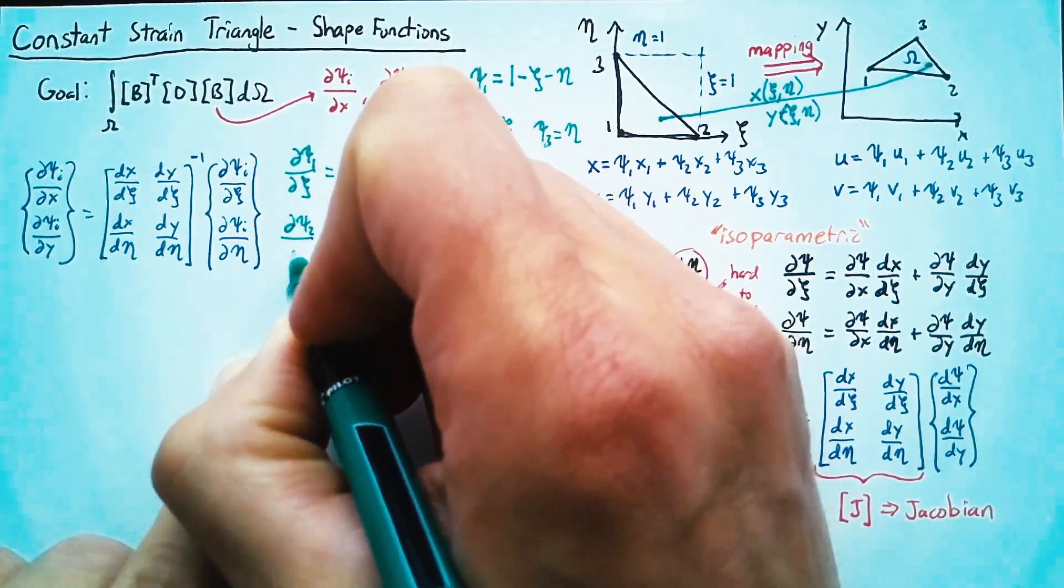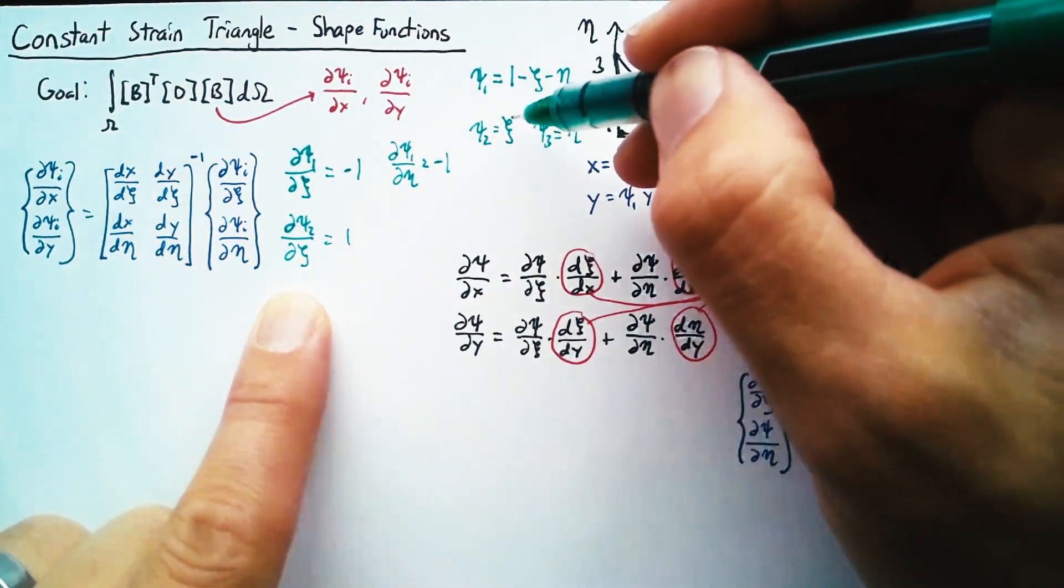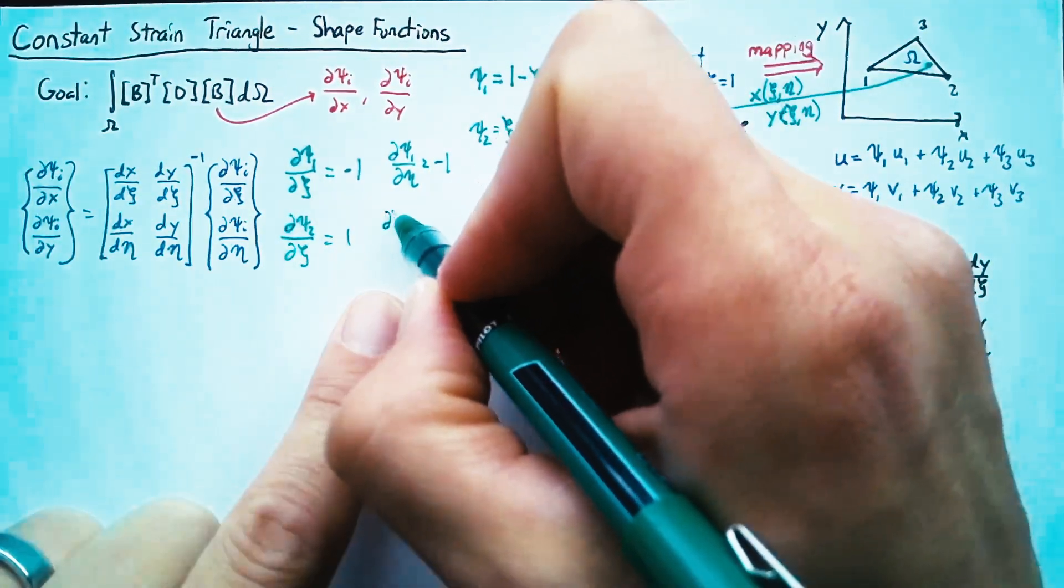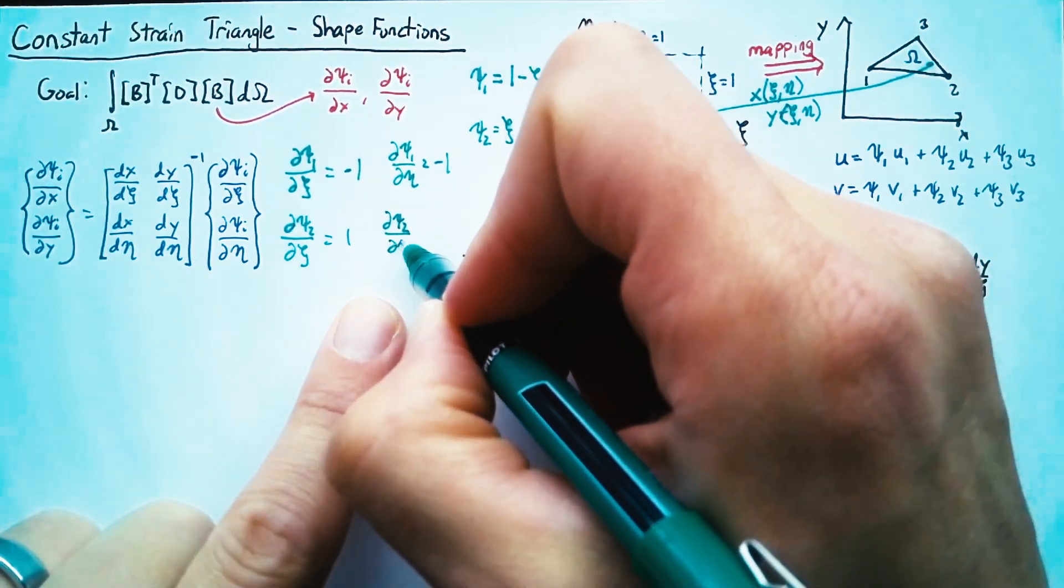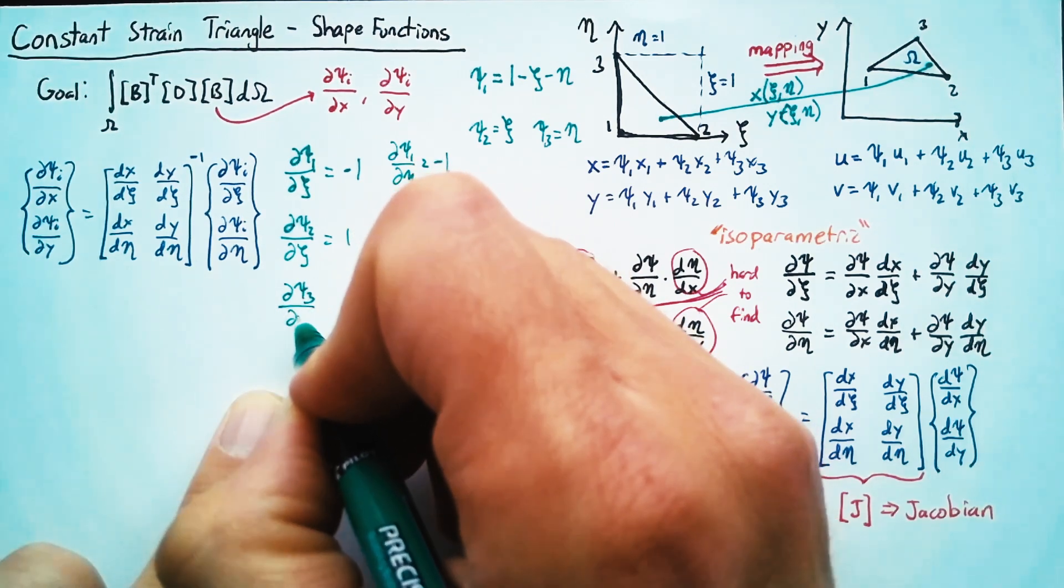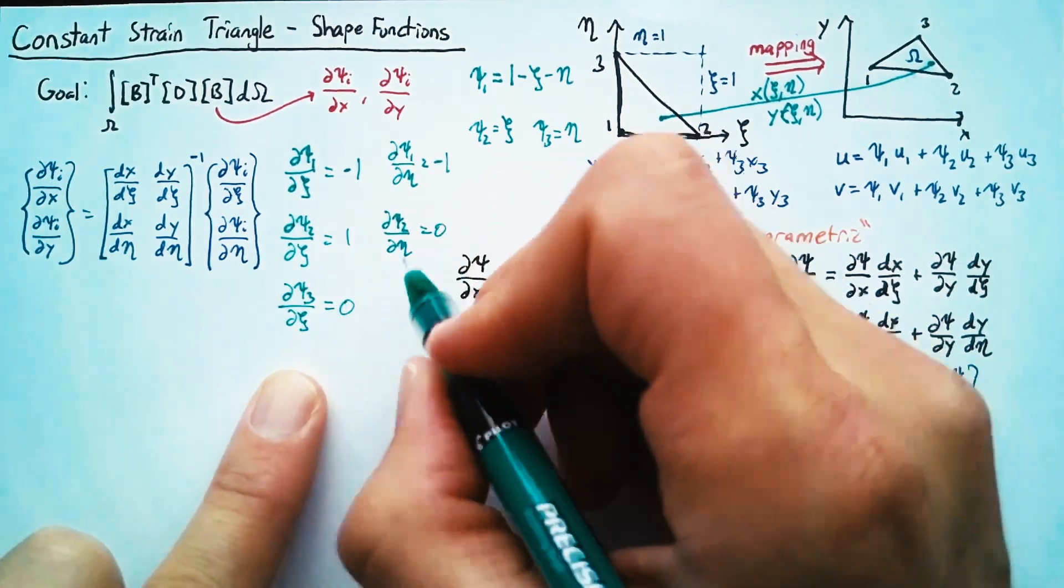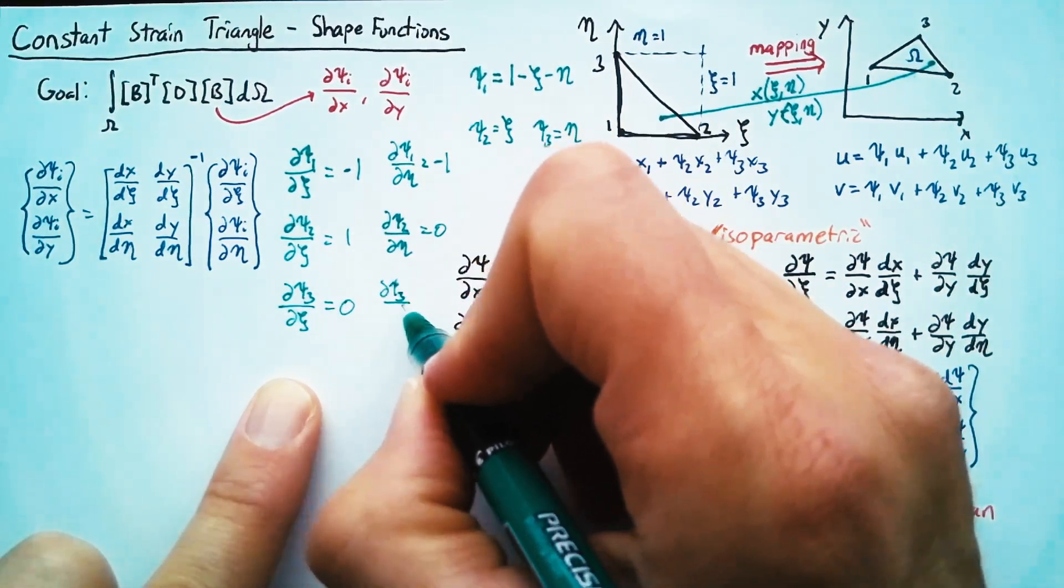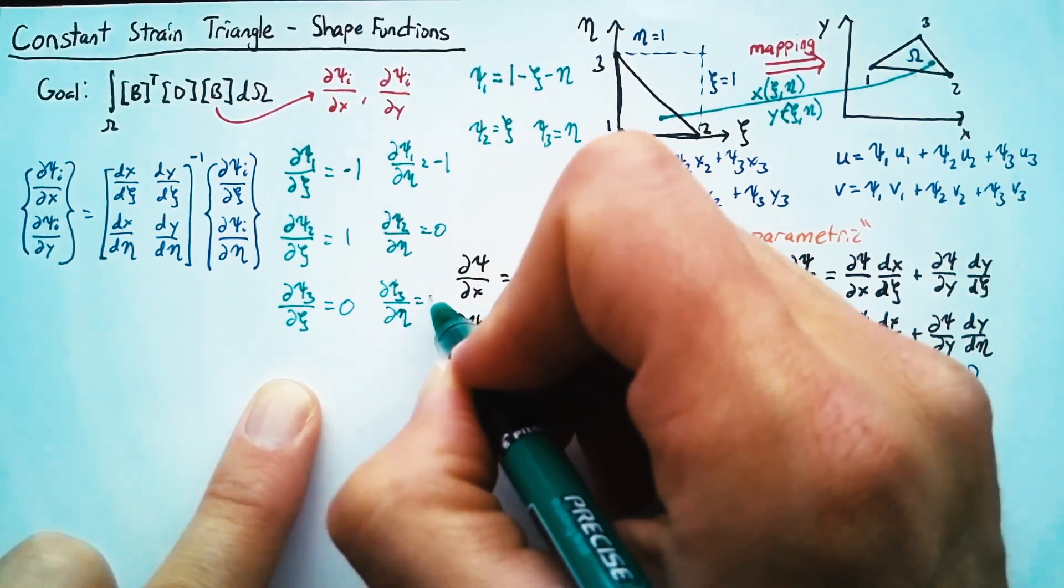And then for Psi two, the derivative with respect to C is equal to one and the derivative with respect to eta is equal to zero. And then finally for Psi three, it's the opposite of that. The derivative with respect to C is equal to zero. The derivative with respect to eta is equal to one.